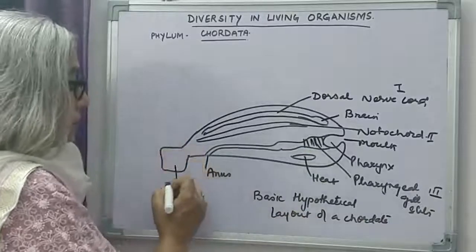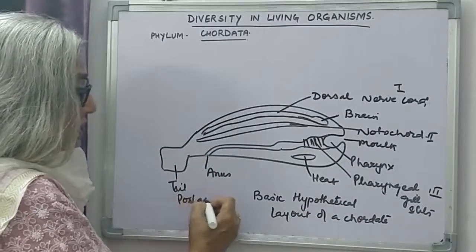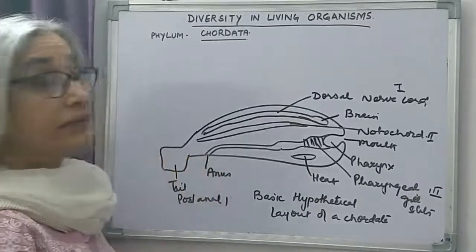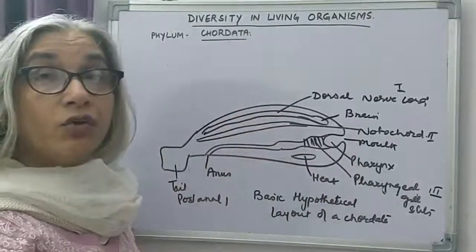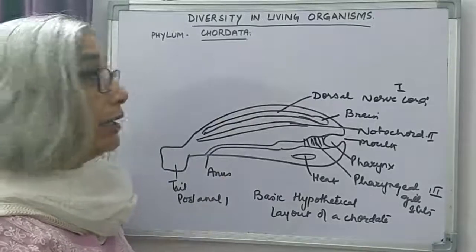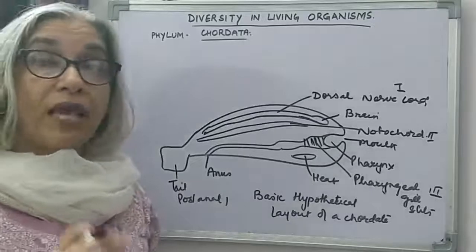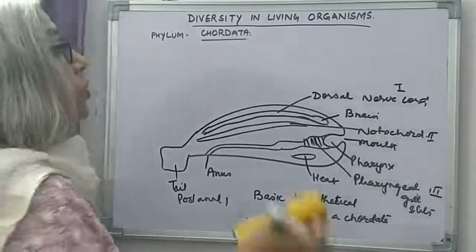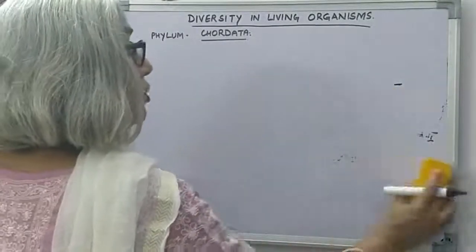This is the tail, called the post-anal tail because it is behind the anus. These three characteristic features are present in all chordates, members of phylum chordata. Now chordata has been divided into subphyla, so let us see the classification of chordata.